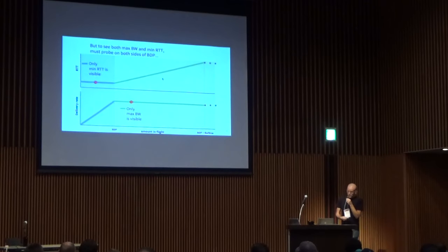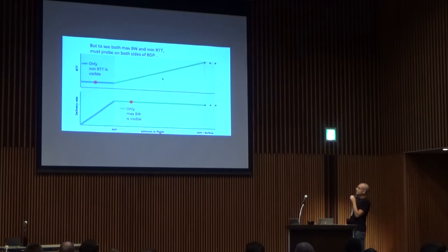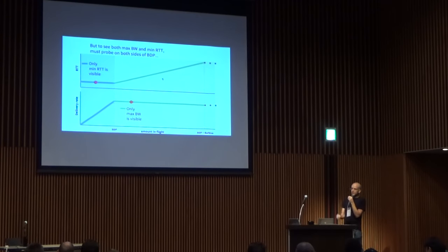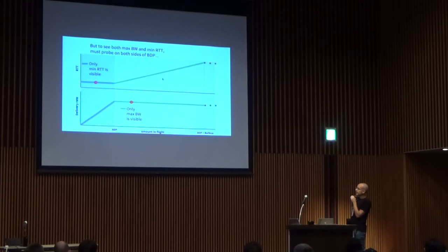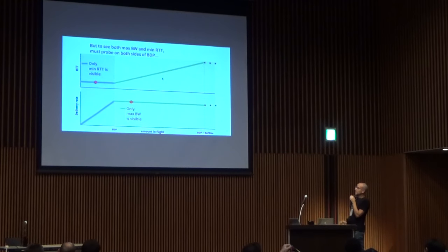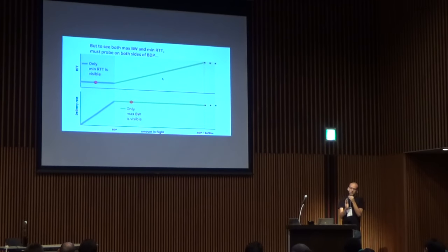One interesting problem: if you want to see both the maximum bandwidth and the minimum round-trip time, you need to spend some time on both sides of that optimal point. On the left side, only the minimum RTT is visible because you don't have enough packets in flight to fully utilize the path bandwidth. And on the other side of the BDP, if you've filled the pipe, there will be a little queue hiding the two-way propagation delay from you. So you need to spend time on each side of that BDP point.